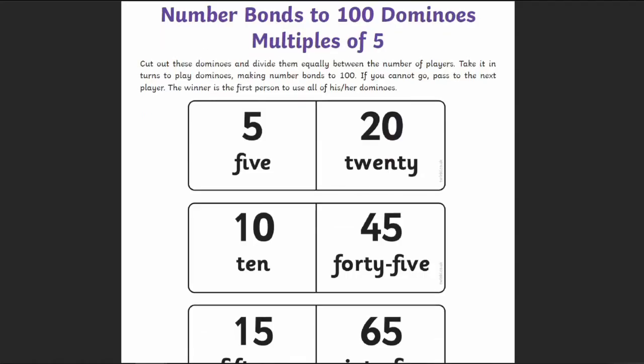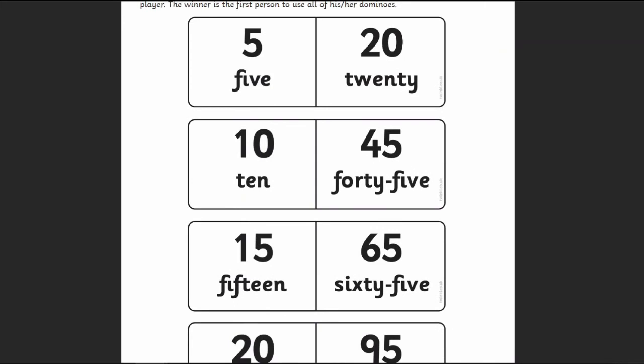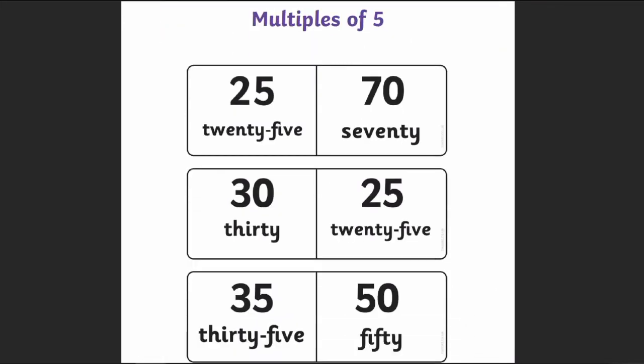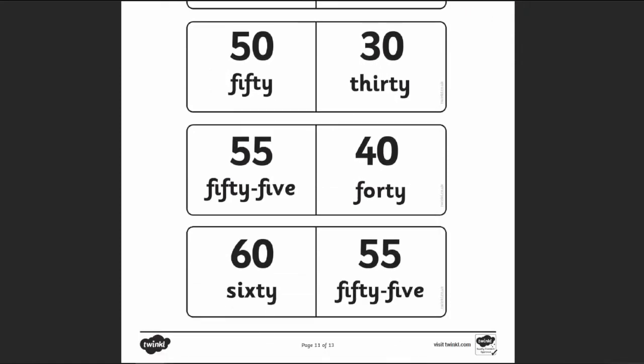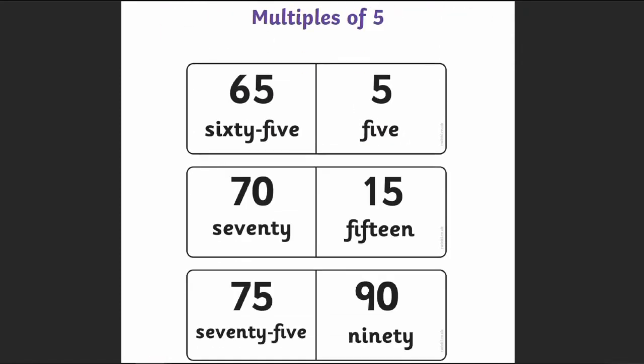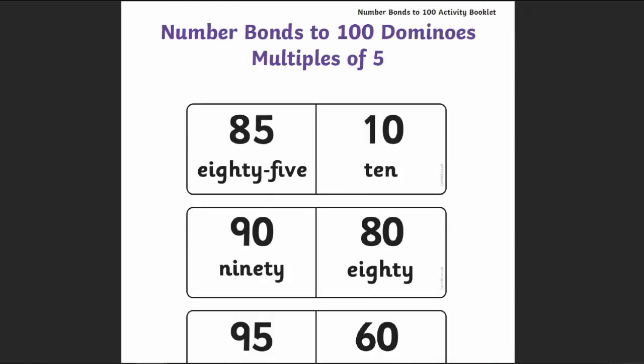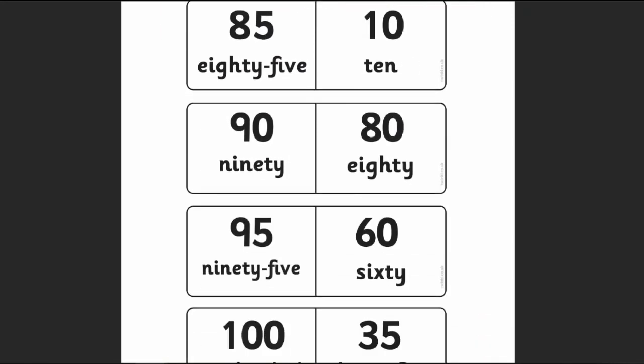Finally there's this game of number bond dominoes. Cut them out and divide them equally between the number of players. Take it in turns to play dominoes, lining up the number bonds to 100. If you can't go, you can pass your turn on to the next player. The first person to get rid of all their dominoes wins.